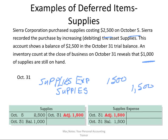So we debit supplies expense $1,500 and credit supplies. When we post this to the supplies ledger, it had $2,500, less the $1,500 credit, leaving a balance of $1,000 — which equals the $1,000 remaining in the cupboard. And we have an expense because we used up $1,500 during the month.